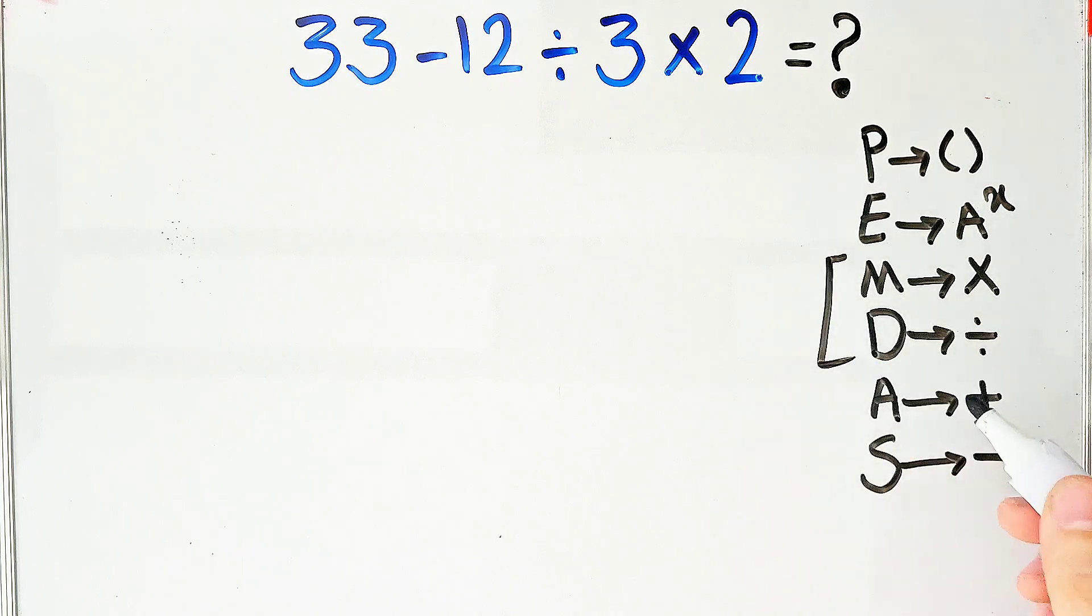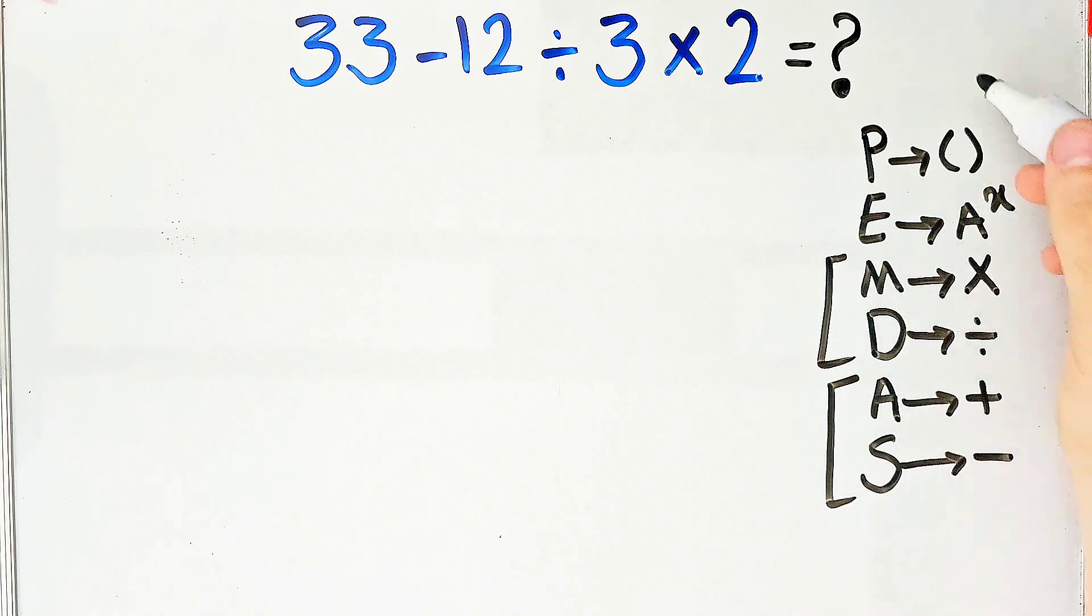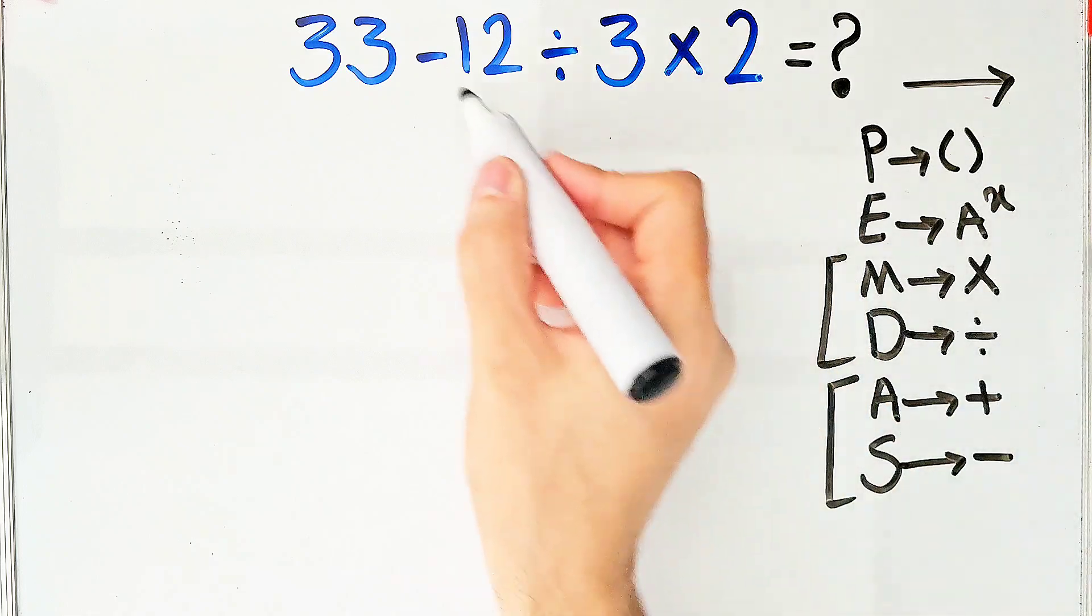Multiplication and division have the same level of priority, also addition and subtraction have the same level of priority, and when we have both in an expression, we start from the left and simplify the question.